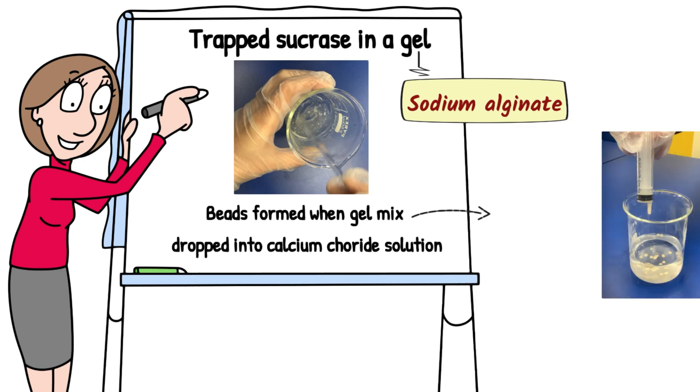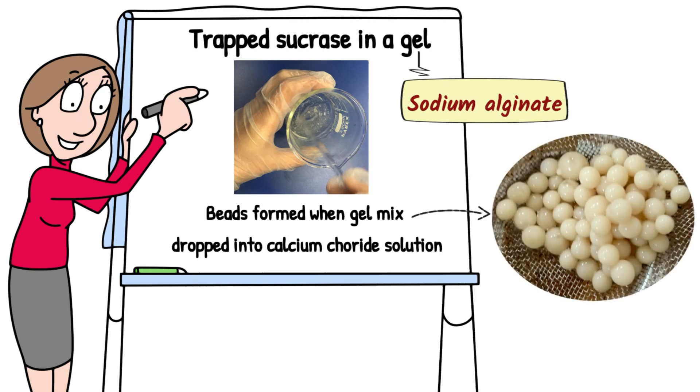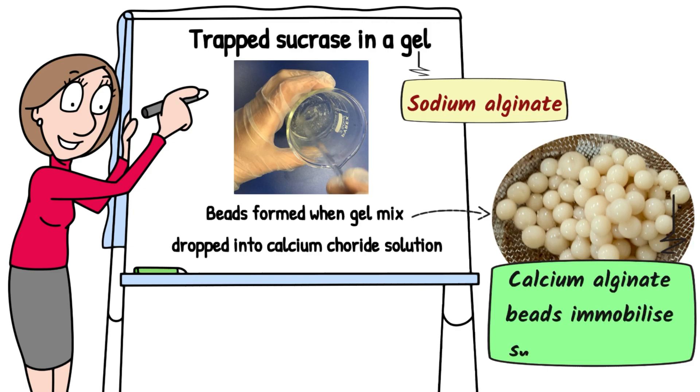In the syringe is the gel and yeast. Eventually, after a few minutes, you've got beautiful beads made of calcium alginate with the yeast containing the enzyme sucrase inside.